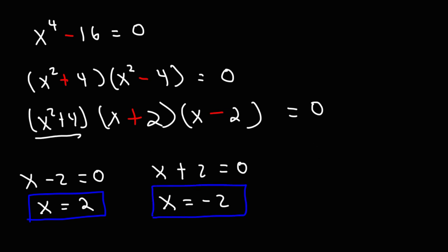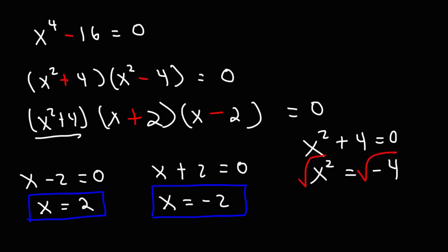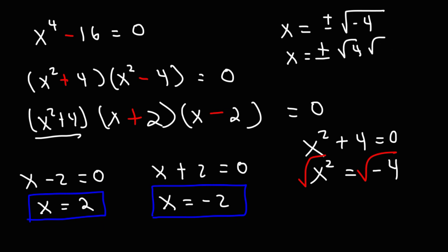Now let's set the factor x squared plus 4 equal to 0. We subtract both sides by 4 to get x squared is equal to negative 4. Taking the square root of both sides, x is equal to plus or minus the square root of negative 4. We can rewrite that as the square root of 4 times the square root of negative 1. The square root of 4 is 2, and the square root of negative 1 is the imaginary number i. So we get x equals positive 2i and x equals negative 2i.